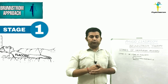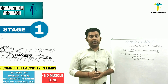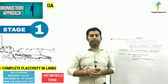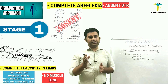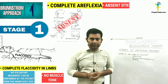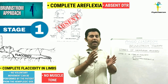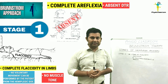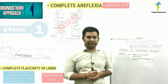In Brunström Stage 1, the hemiplegic upper and lower limb remains completely flaccid with no tone. There is complete areflexia — that is, the deep tendon jerks remain absent. The patient is unable to produce any voluntary movement from the hemiplegic side. These are the key characteristic features of Stage 1 of hemiplegia recovery.